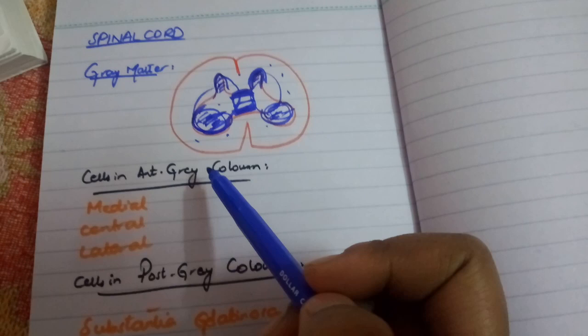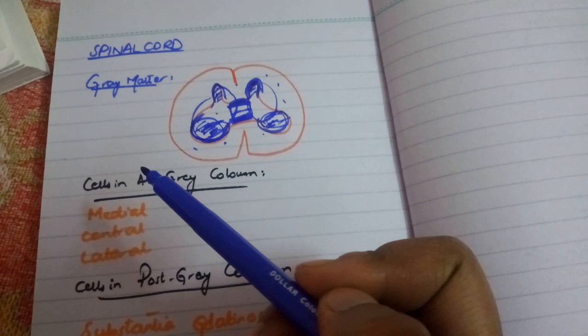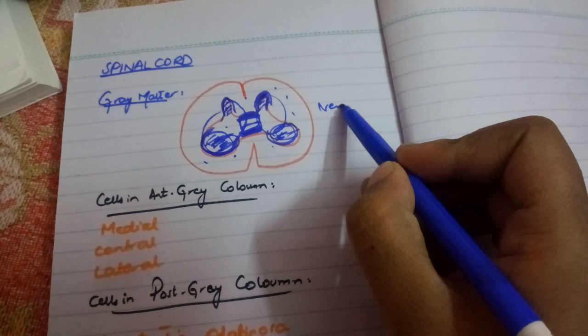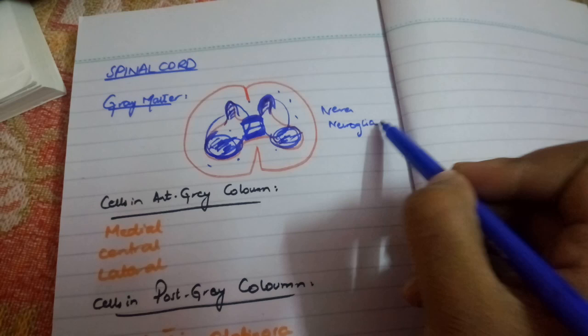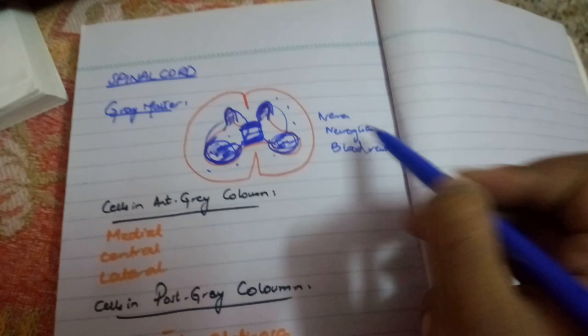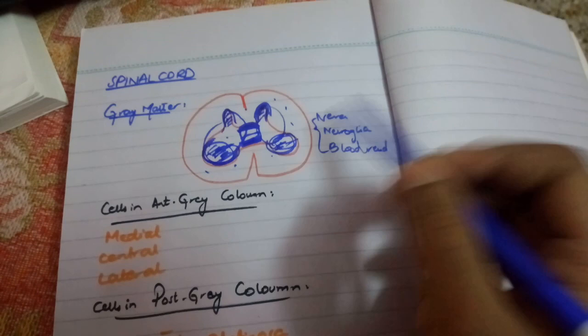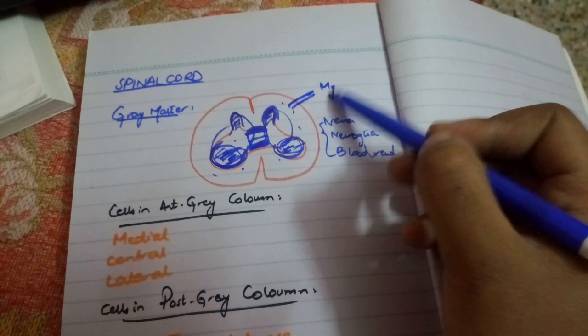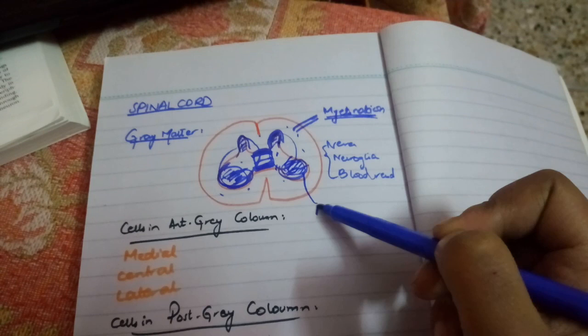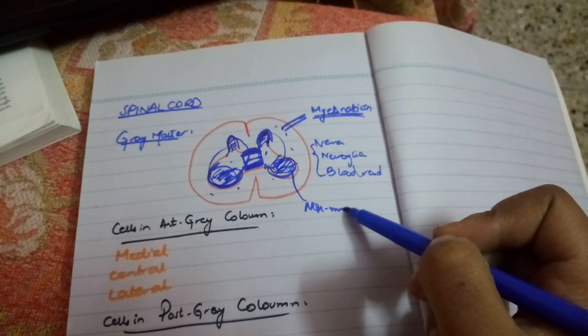Of course this is part of the central nervous system, so neurons and nerve cells are present here. Both white matter and gray matter contain nerve cells, neuroglial supporting cells, and blood vessels. The difference is that in white matter, the axons are mostly myelinated — myelination gives a white appearance. In gray matter, the neurons are mostly non-myelinated cell bodies and non-myelinated axons, which is why the appearance is grey.